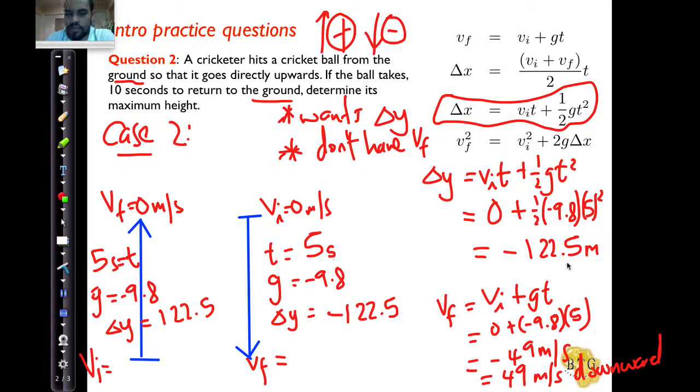Similarly, over here, this is equal to 122 comma 5 downward, because that's a displacement. They just wanted the height, so it's sufficient to say the height is equal to that. Now, if this is 49 meters per second negative, this one over here is going to be 49 meters per second positive. Why? Because this is case number two. The speed with which it leaves here, going up, is exactly the same as the speed here.